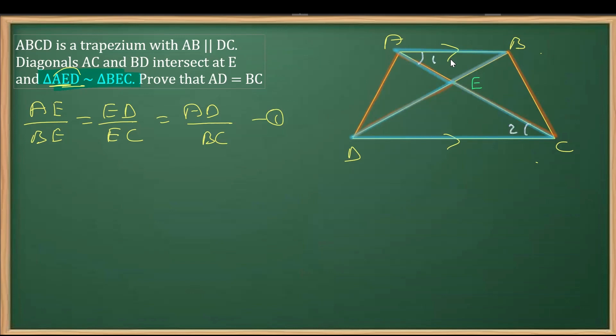These alternate or corresponding angles are equal as the lines are parallel—AB is given parallel to DC. Once we write these two triangles as similar, triangle AEB should be similar to triangle CED, where A corresponds to C, E to E, and B to D.